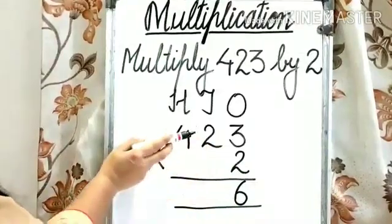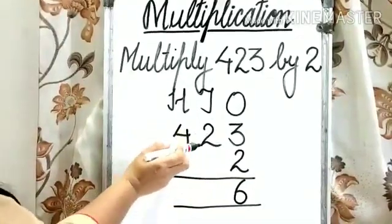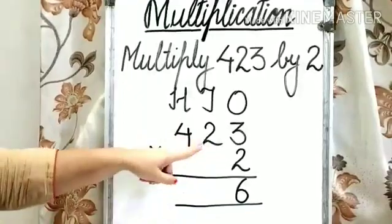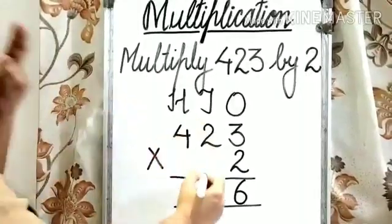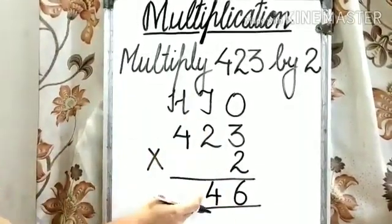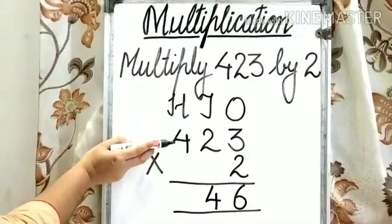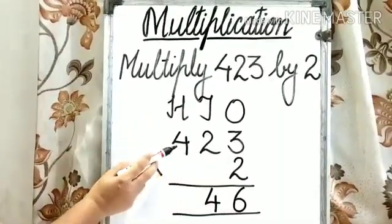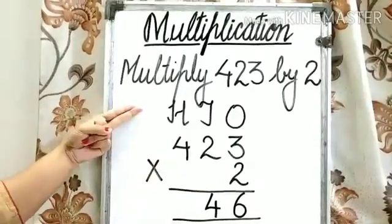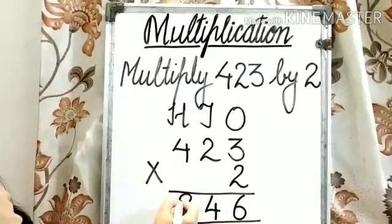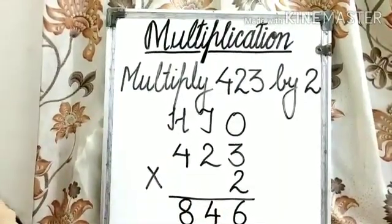Step 2: multiply the digit at the 10s place by 2, meaning we need to multiply 2 by 2. 2 2s are 4. So write down 4 under the 10s column. Step 3: multiply the digit at the 100s place by 2, meaning we need to multiply 4 by 2. 4 2s are 8. So write down 8 under the 100s column. Our product is 846.